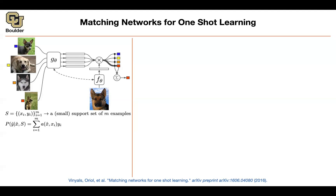The label for this new image is essentially a weighted summation of these labels. Because the labels are one-hot vectors, one of them will dominate by having the largest weight, and you report that as the corresponding class for this unlabeled image. Pay close attention to the notation: x̂ is the new image, S is the support set, and you are predicting conditioned on the image and the support set — unlike before when you didn't have S.